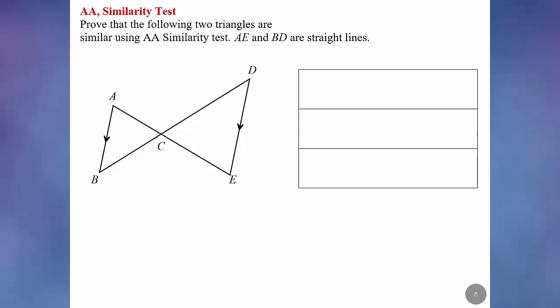In this question, we will prove that the following two triangles are similar using AA similarity test. AA stands for angle-angle.